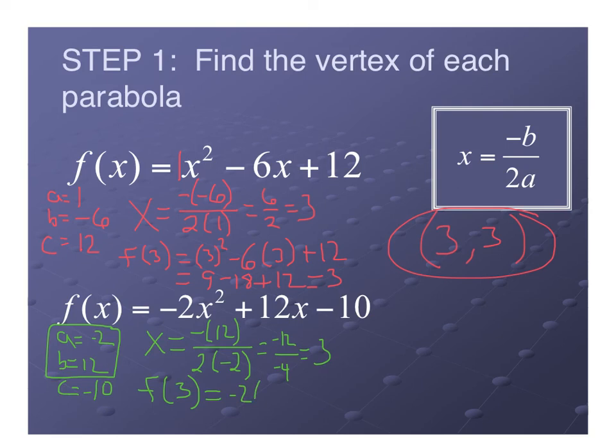We'll see what we get for the y-coordinate this time. So let's plug in 3 for x. We have negative 2 times 3 squared, plus 12 times 3, minus 10. So let's move it up here. 3 squared is 9, so we get negative 2 times 9. Negative 2 times 9 is negative 18. We have 12 times 3, which is 36, minus 10.